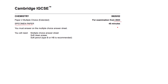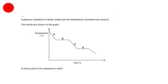Specimen paper 2023, paper 2 multiple choice, question number 1. A gaseous substance is slowly cooled and temperature recorded every second. This is a cooling curve. In the beginning the substance is present in gas phase. As you move along the curve, you can see that the temperature has been decreasing.